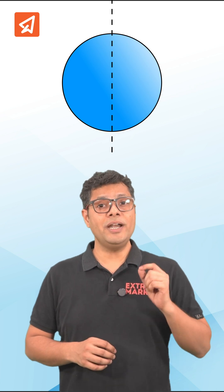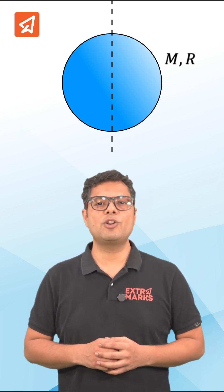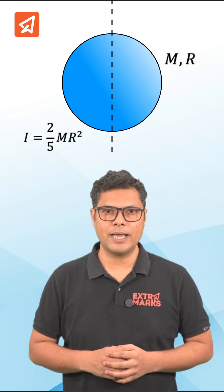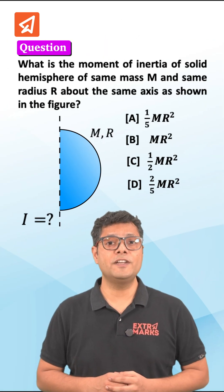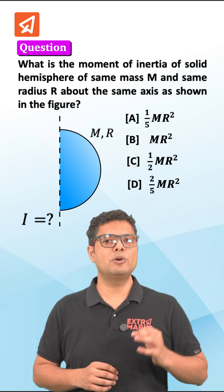You all know that the moment of inertia of solid sphere of mass m and radius r about its centroidal axis is 2 by 5 m r square. But what will be the moment of inertia of a solid hemisphere of mass m and radius r about the same axis?